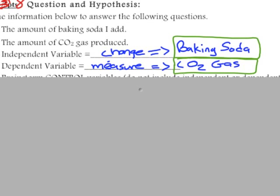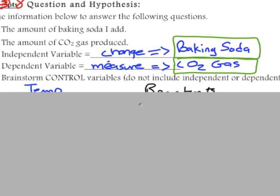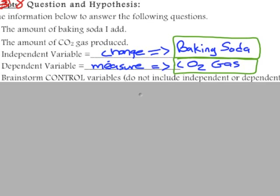The next section is identifying the independent and dependent variables, as well as controls, and writing a question and hypothesis. On your final we'll give you two statements — for example: 'the amount of baking soda I add' and 'the amount of CO2 gas produced.' Your challenge is to identify what you change and what is measured. The independent variable is what is changed, so 'the amount of baking soda I add' is the independent variable, and you measure the amount of CO2 gas produced.